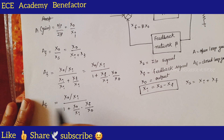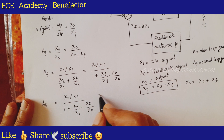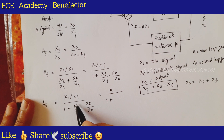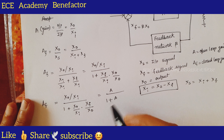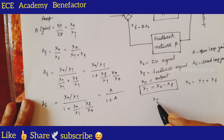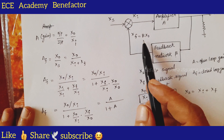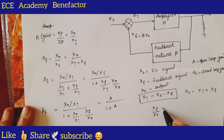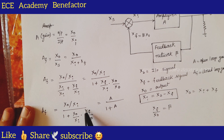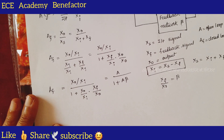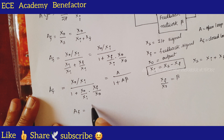So A_f can be written as A by 1 plus — what is x_naught by x_i? It is A. And what is x_f by x_naught? Since x_f equals beta times x_naught, the ratio x_f by x_naught equals beta. So what we get is: A_f equals A by 1 plus A beta.